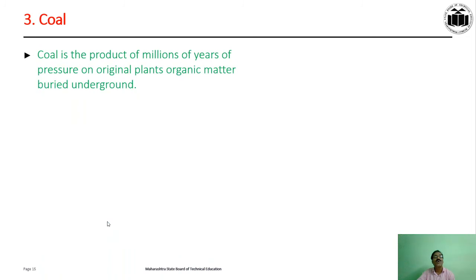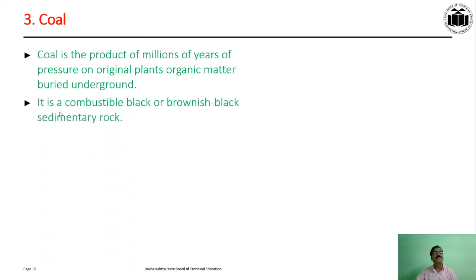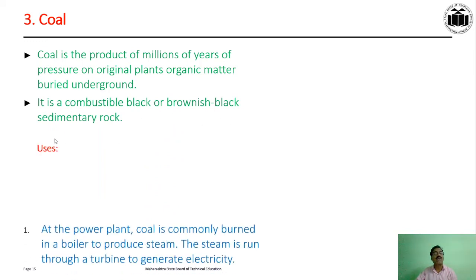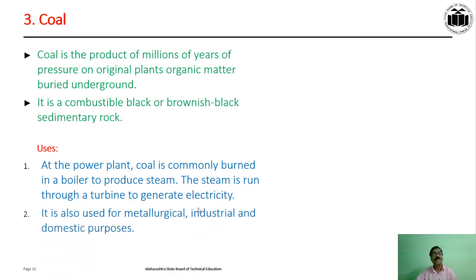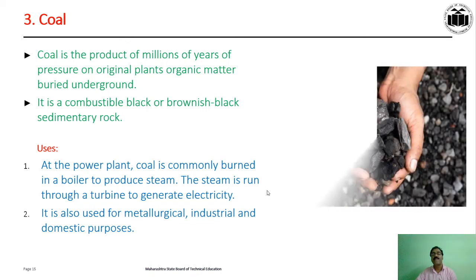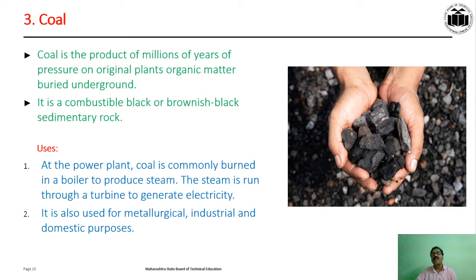Coal is the product of millions of years of pressure on original plants and organic matter buried underground. It is a combustible black or brownish-black sedimentary rock. Uses of coal: at the power plant, coal is commonly burned in a boiler to produce steam, and the steam is run through a turbine to generate electricity. It is also used for metallurgical, industrial and domestic purposes. Coal is also called black gold.